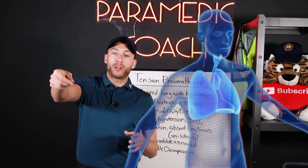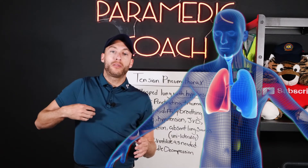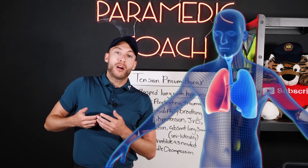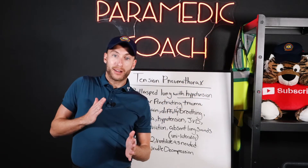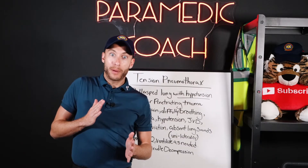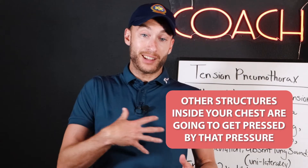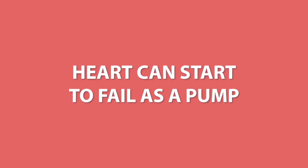Let's say a bullet enters my chest on the right side. My right lung is affected — it's going to collapse because it got pierced. Air accumulates and gets released into the chest cavity, building up pressure outside the lung. Over time, other structures inside your chest get compressed by that pressure, including the heart, and the heart can start to fail as a pump.